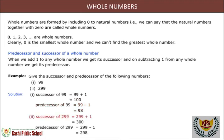Successor of 299 is equal to 299 plus 1 is equal to 300.